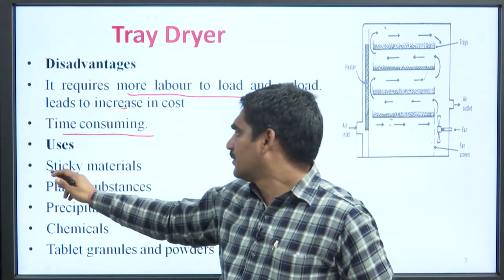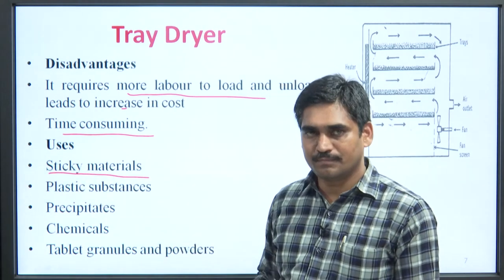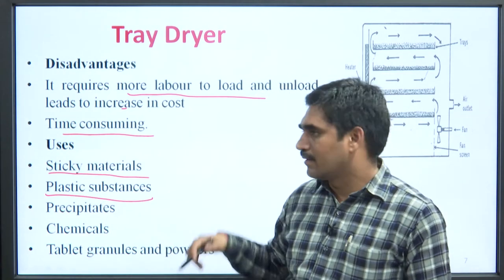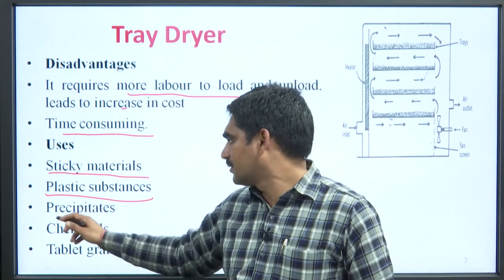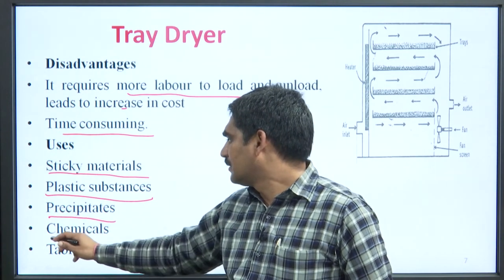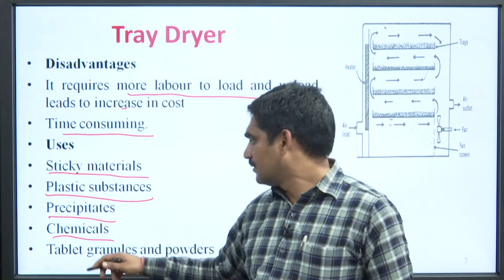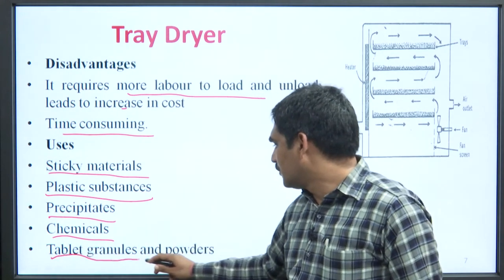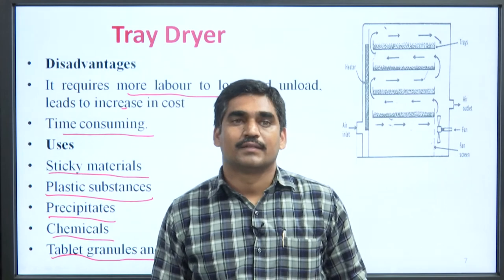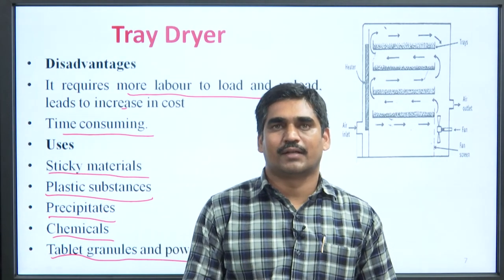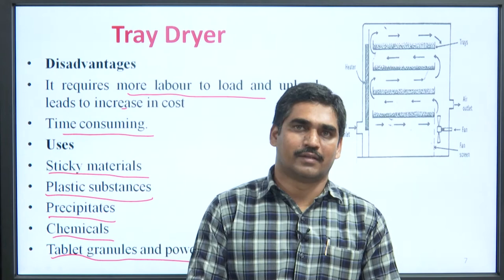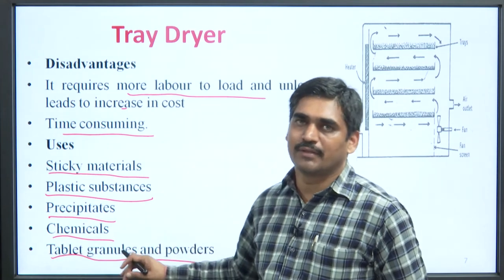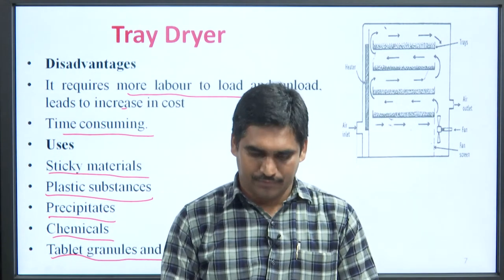Uses of tray dryer: it is used for sticky materials, plastic substances, precipitates, chemicals, tablet granules, and powders. Drying of tablet granules is the most widely used application of the tray dryer in the pharmaceutical field.